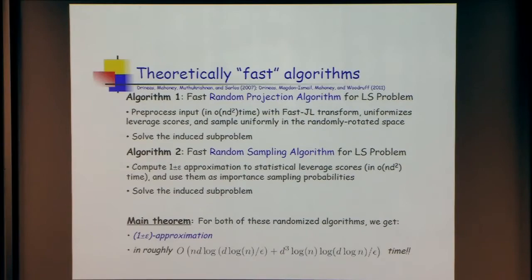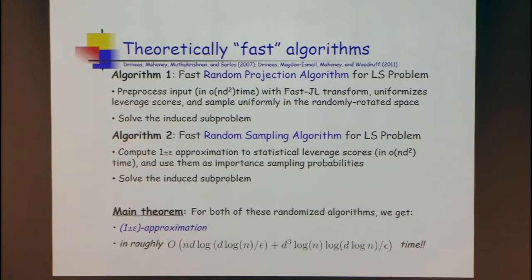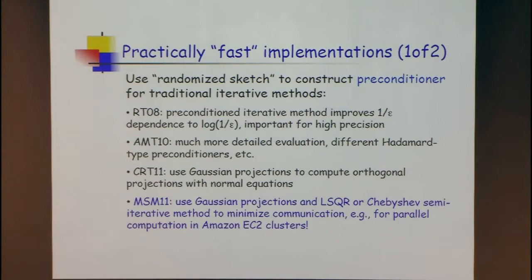If you want epsilon to be 10-to-the-minus-10, take the sketch you did — rather than solving the subproblem directly, use it as a preconditioner. Call a traditional iterative method. You get a well-conditioned system and don't need to iterate too much. That's what Blendenpik did — the quote I put up earlier about beating LAPACK. And I'll talk about how to do the same idea in parallel distributed environments — that's LSRN.